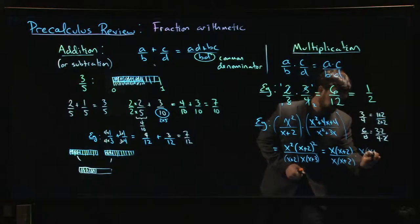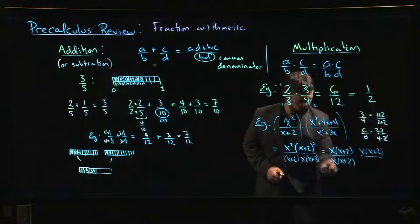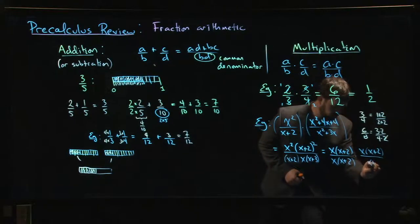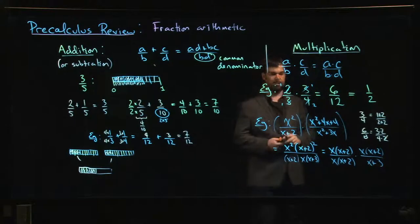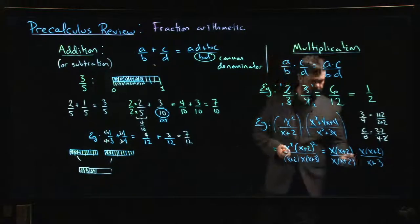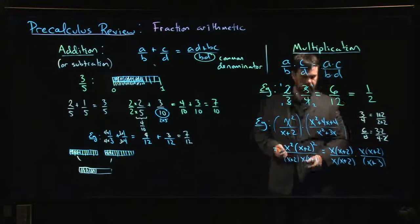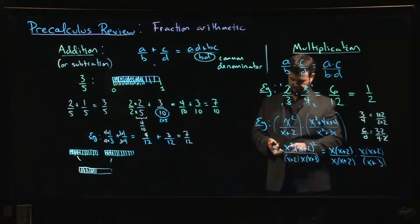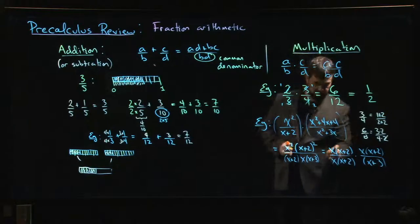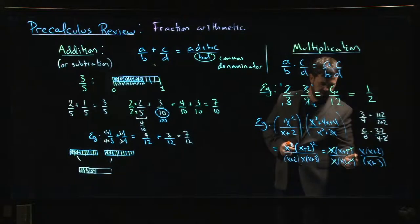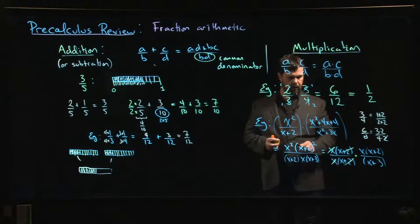And then write down everything that's left over. There's another x and another x plus 2 on the top, and on the bottom there's an x plus 3. I can realize that yes, these x's can be canceled, those x plus 2's can be canceled because I'm multiplying. And then I've got my simplified answer: x times x plus 2 over x plus 3.